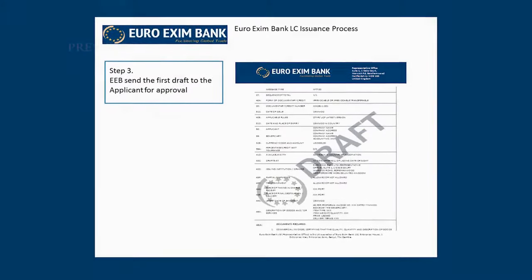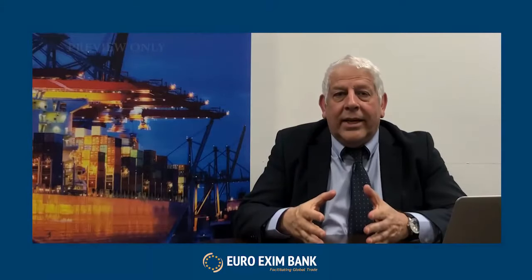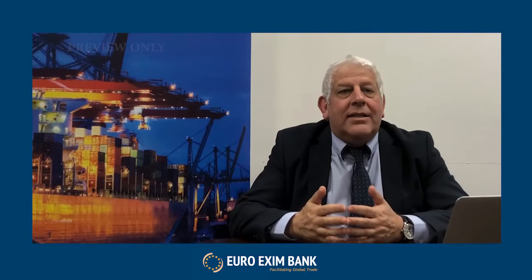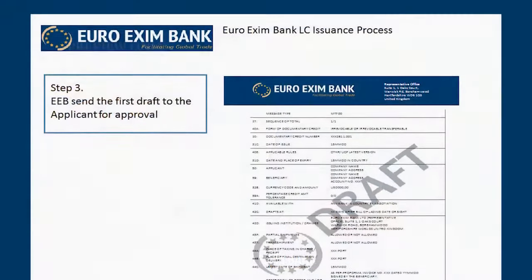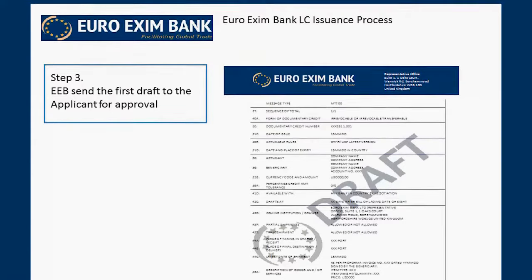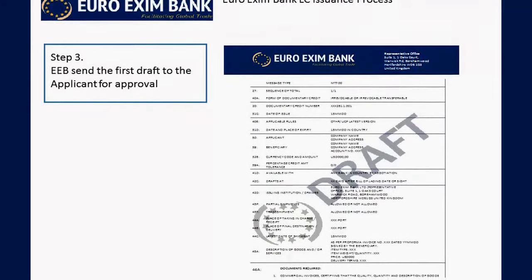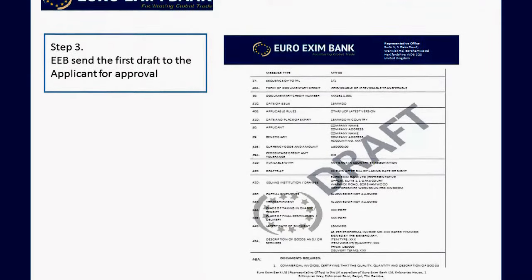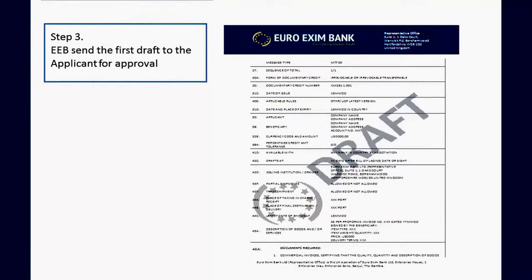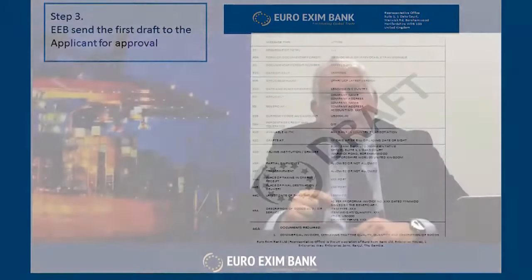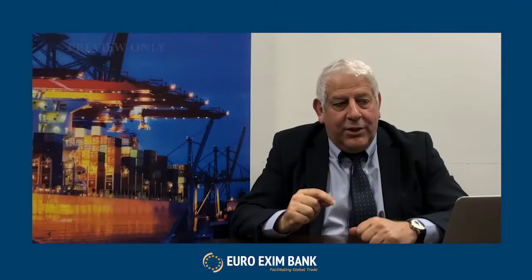In step three, when we have created the first draft internally, our role is then to send that transaction — the information contained in the specific format — to the applicant, the buyer. At this point, the buyer will look at the detail again and ensure they're happy with the content in those fields of information. They will then approve this message and we move to the next stage.